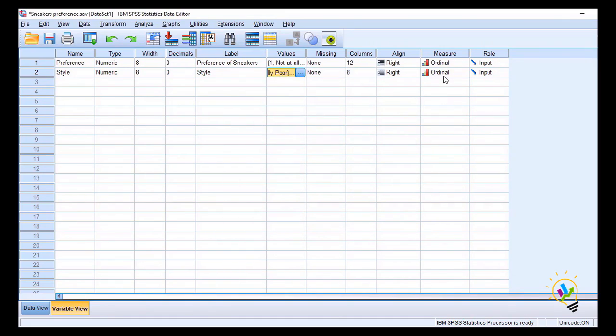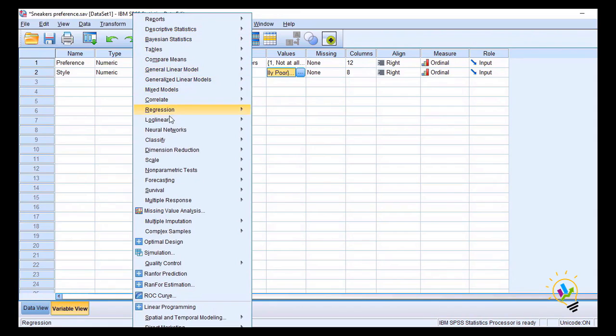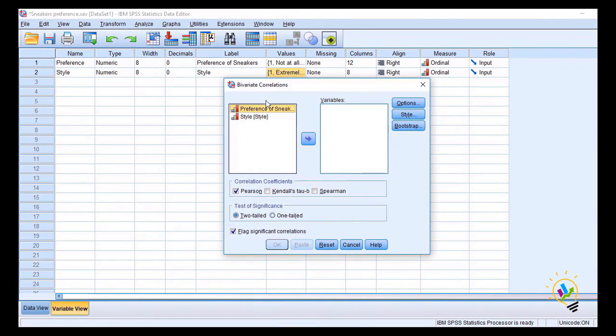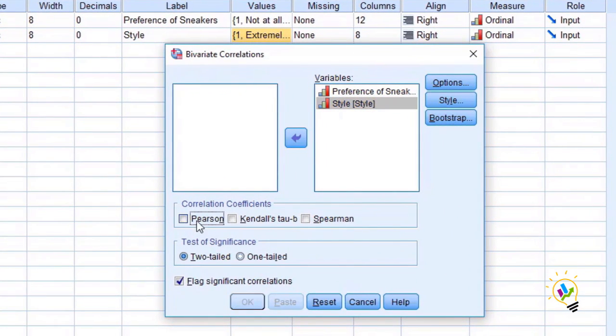Now let us do the correlation between preference and style. We go to Analyze, Correlate, and Bivariate Correlation. Now I'm going to select the two variables: preference and style. Instead of selecting Pearson correlation, we will select Spearman correlation and click OK.